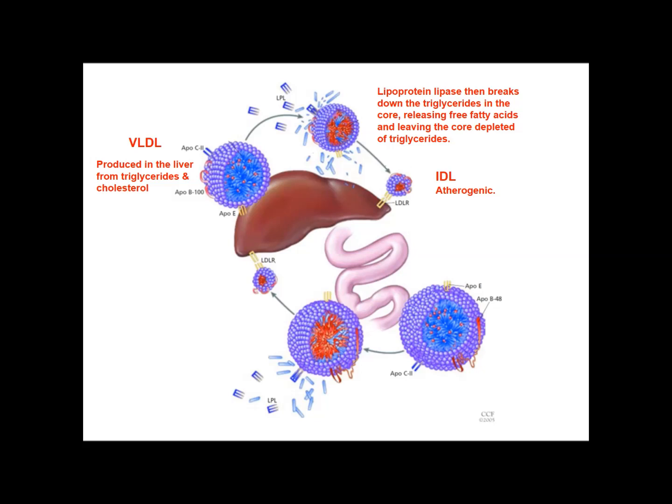Once that process has happened, what you end up with is a smaller lipoprotein because half of its core — which is mainly cholesterol — has been removed. And because it's smaller, it is also atherogenic. This is known as intermediate density lipoprotein, IDL, which also has the capacity to get under the endothelium and cause problems.